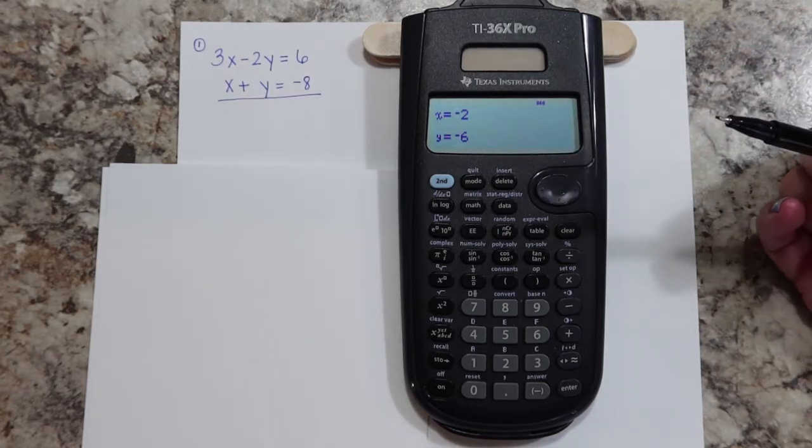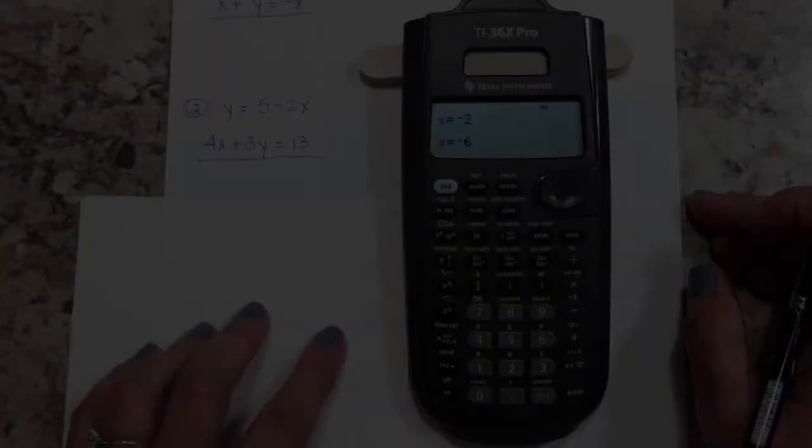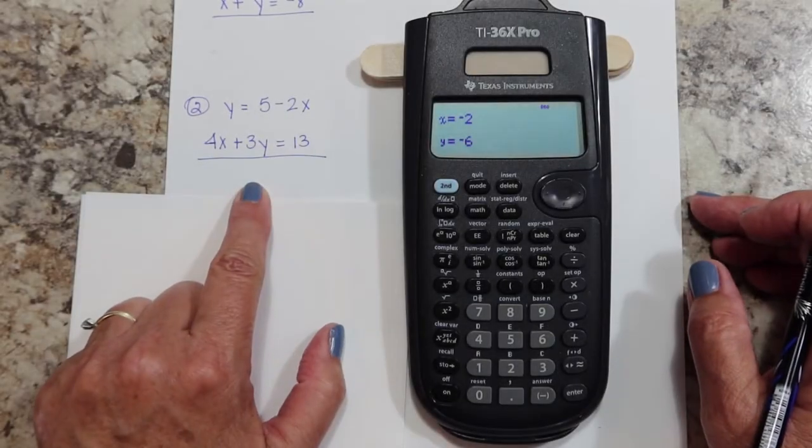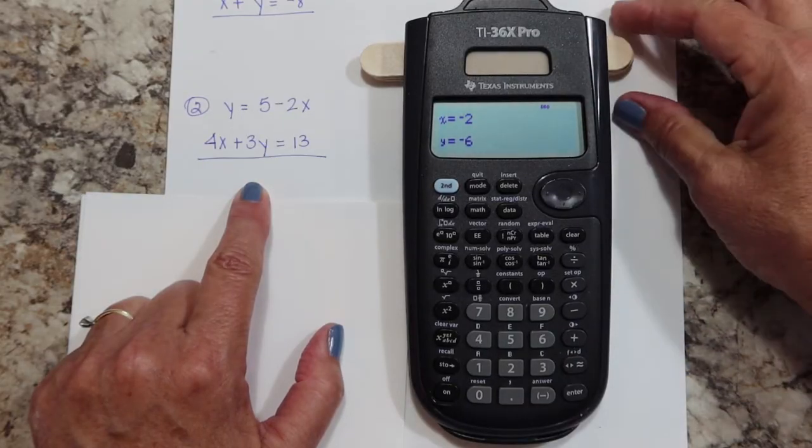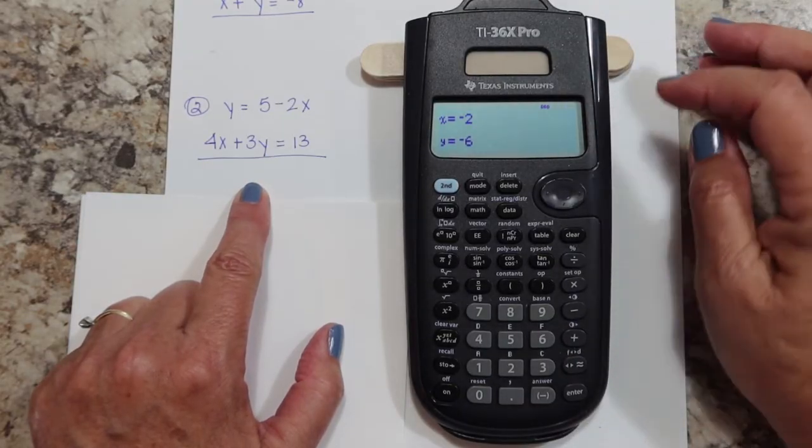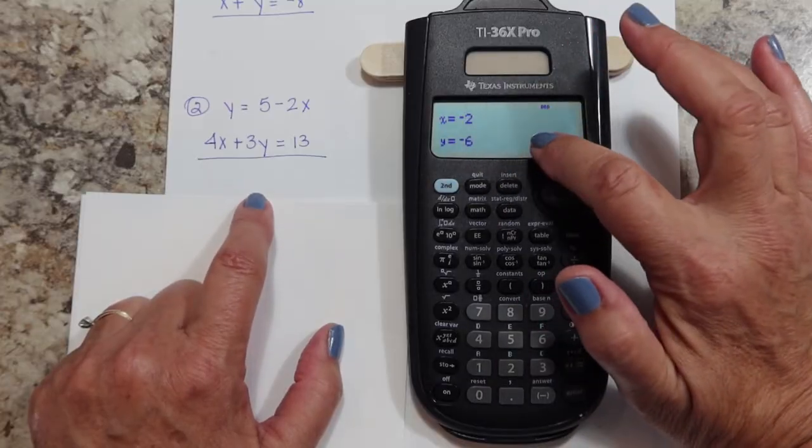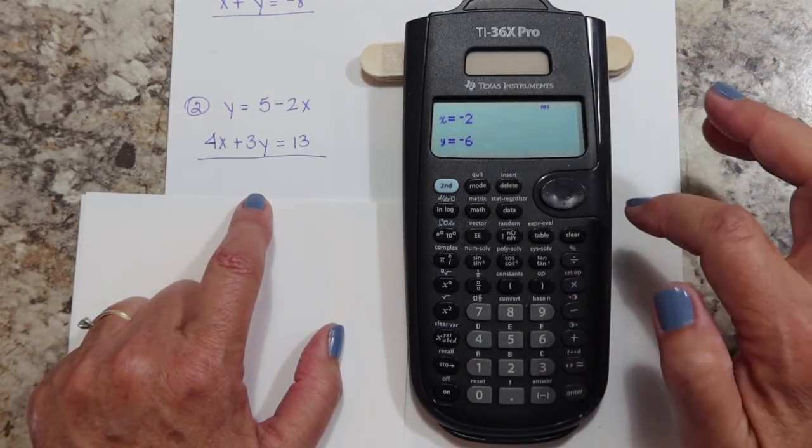Now that was a basic one, so let's look at what can happen. Let's look at the setup on this next problem. And if you're wondering why I have popsicle sticks behind the calculator, that's to keep the glare off the screen.